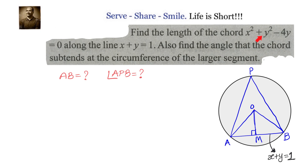Find the length of the chord of a circle with equation x² + y² - 4y = 0 along the line x + y = 1. Also, find the angle that the chord subtends at the circumference of the larger segment.